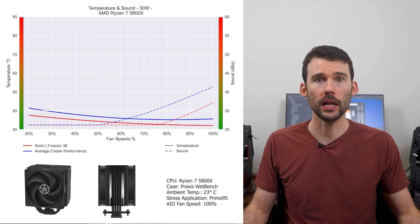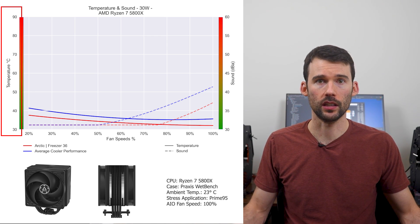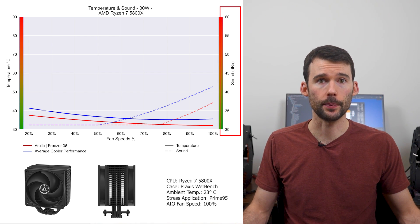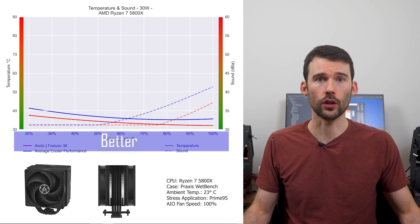In the first set of charts normalized by percent speeds against the average of all coolers, we have temperatures on the left represented by the solid line, noise on the right represented by the dash line, and percent speeds on the bottom. For this graph, lower is always better.